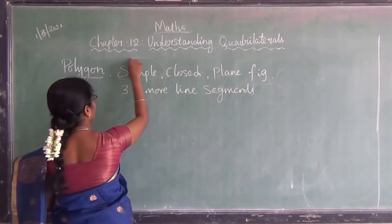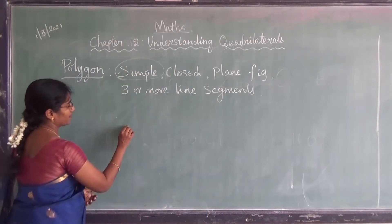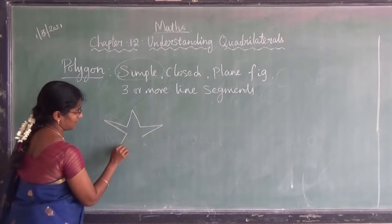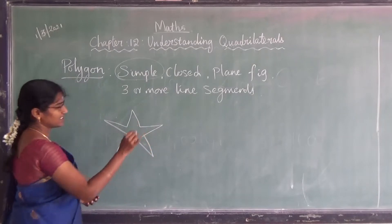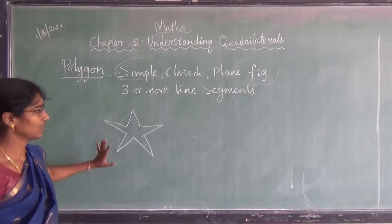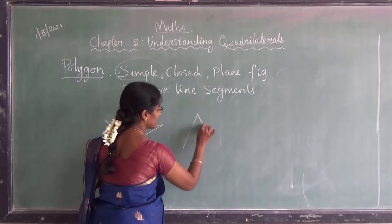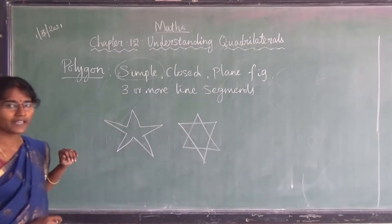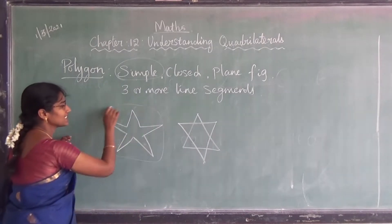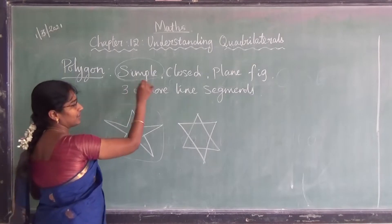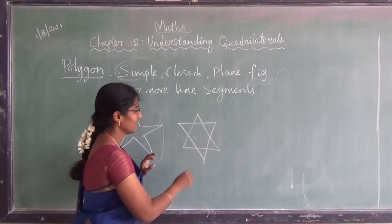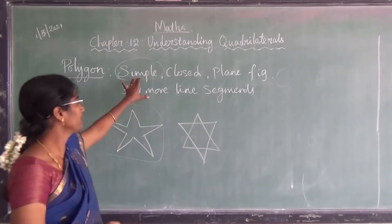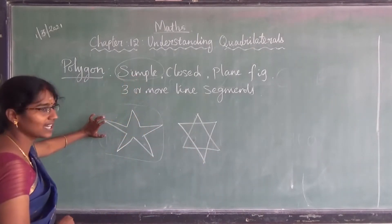What is the meaning of 'simple'? Suppose you know the shape of a star — we can draw a star in two ways. One star we call a simple figure. The other is not a simple figure because it crosses over the other line segments. So, simple figure means it doesn't cross the other line segments.